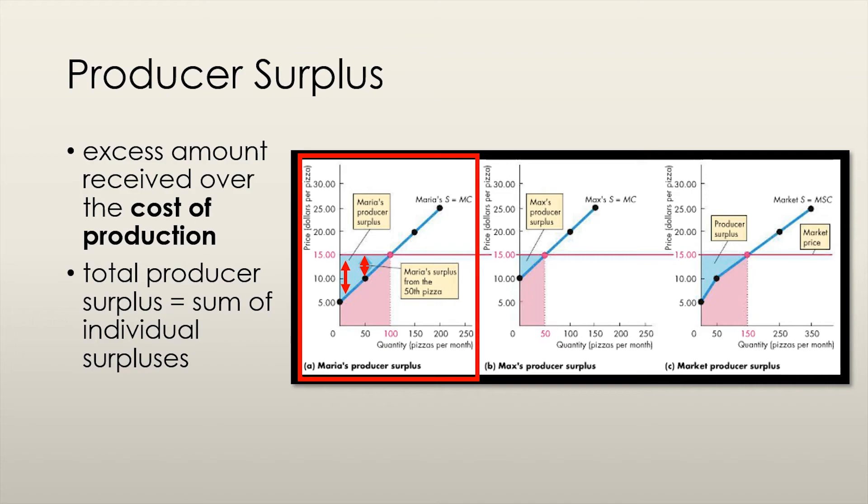Producer surplus is defined as the excess amount received from the sale of a good or service over the cost of producing it. We're looking at how much money the firm receives by selling the good compared to how much it spends producing the good. In the highlighted graph, we can see that if Maria produces the 50th unit, it would cost her $10 to produce it. However, the market price is $15, so her surplus for the 50th unit would be $5.